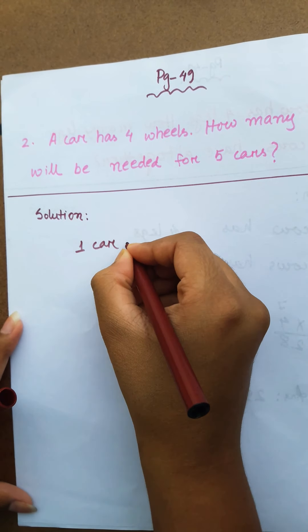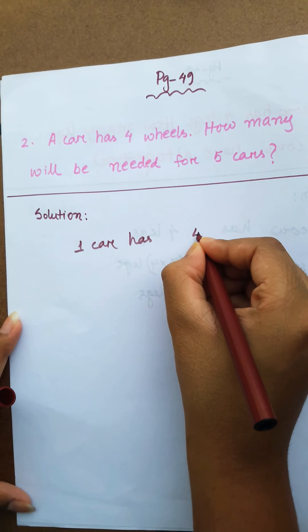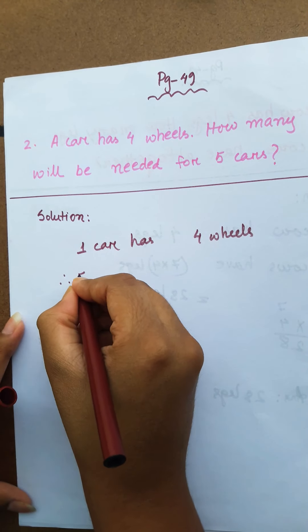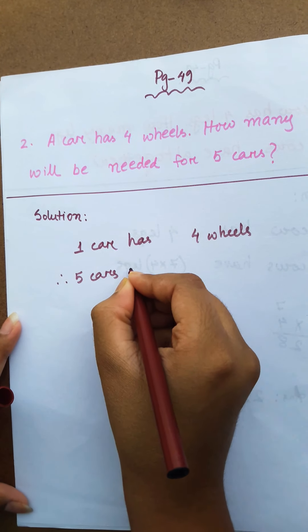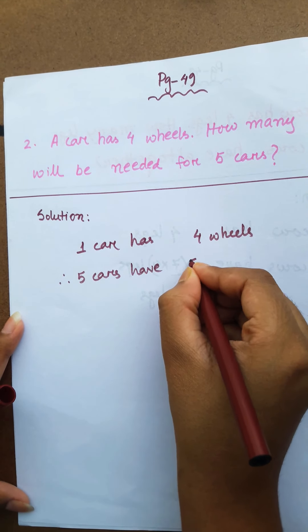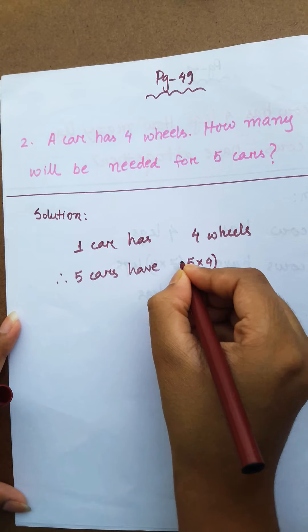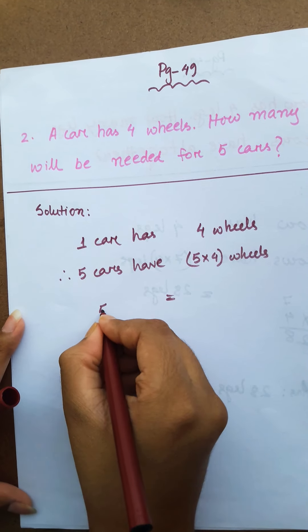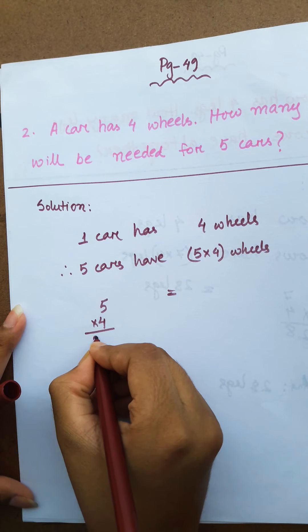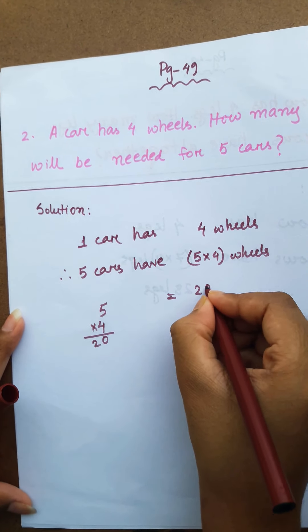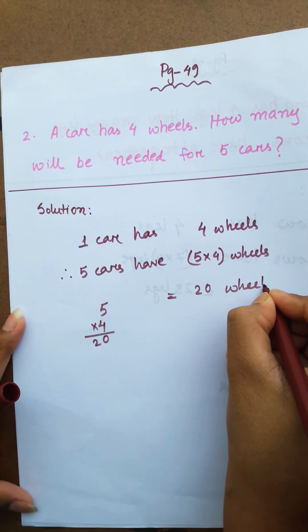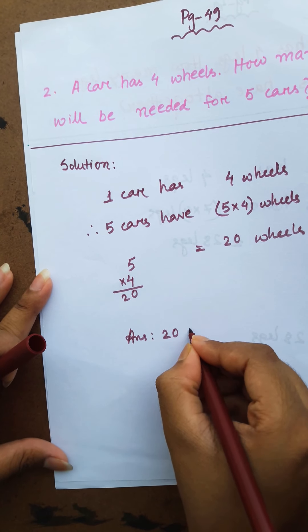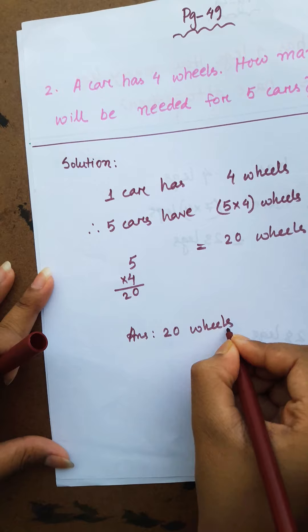One car has 4 wheels. Therefore, 5 cars have 5 into 4 wheels, which is 20 wheels. So the answer is 20 wheels.